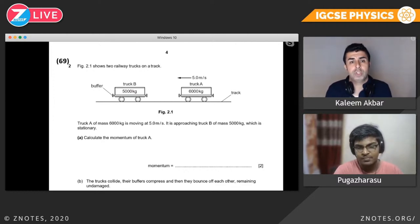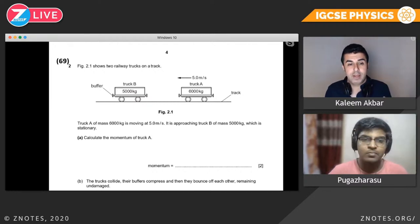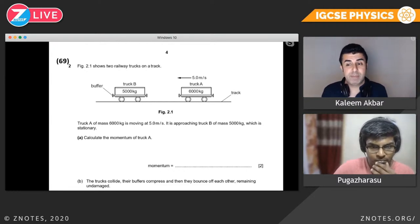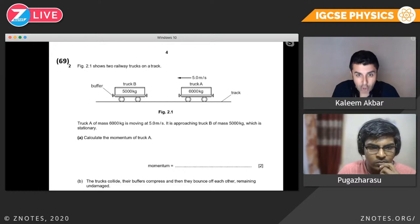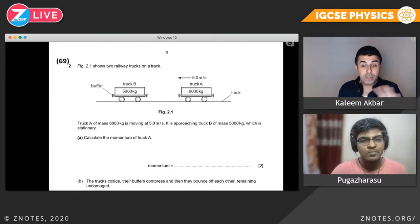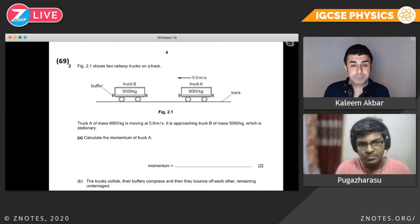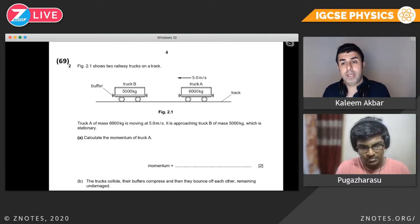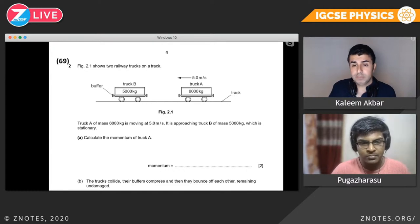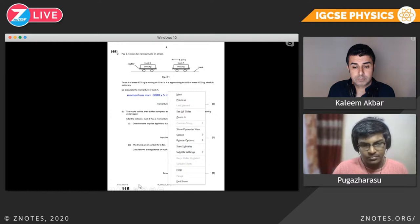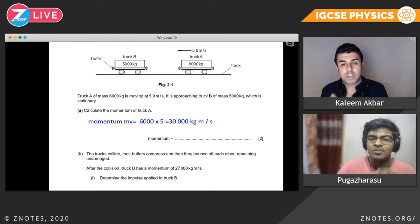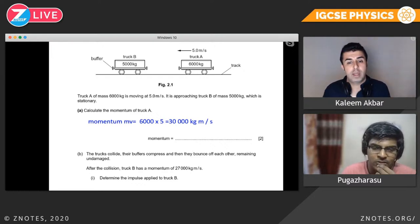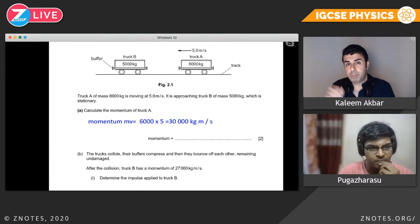Let's do a couple of past Cambridge questions. Figure 2.1 shows two railway trucks on a track. Truck A has a mass of 6,000 kilograms, moving at 5 meters per second, approaching truck B which is 5,000 kilograms and stationary. The most common example is one thing moving and one thing not moving. Calculate the momentum of truck A — this is nice and easy: momentum equals mass times velocity.